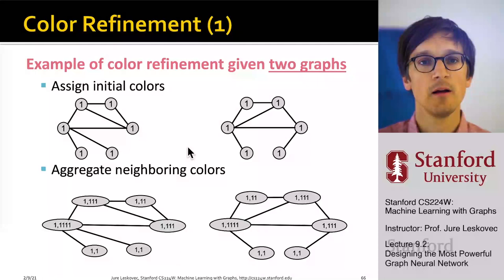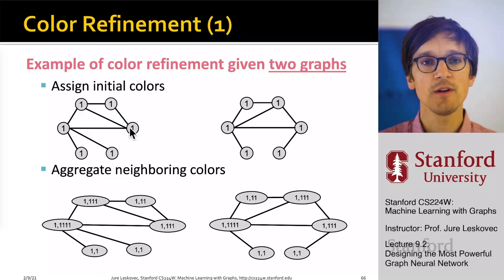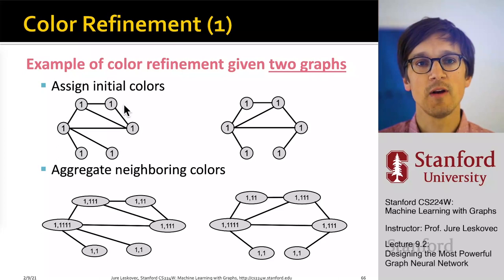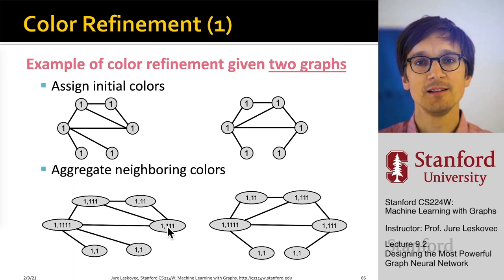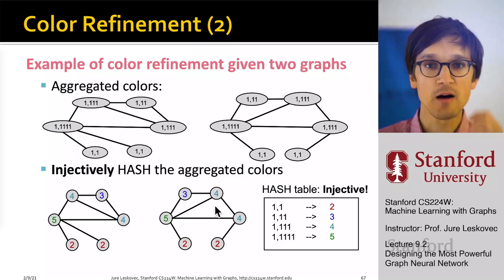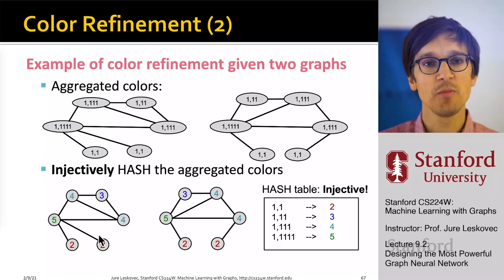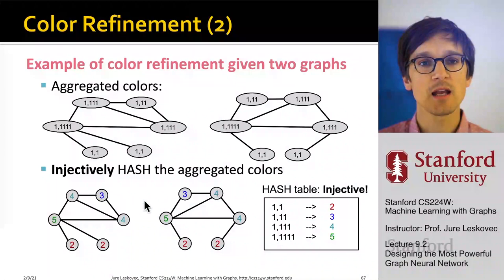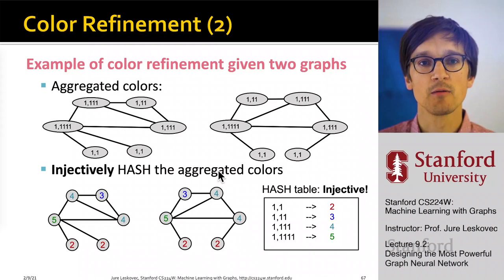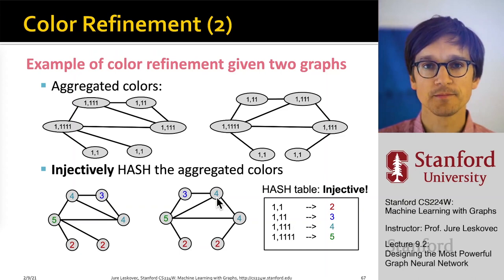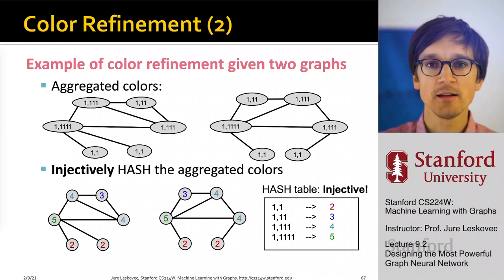For example, given two non-isomorphic graphs, we initialize all node colors to 1. A node with three neighbors each of color 1 gets description (1,1,1,1). After hashing these descriptions — assuming an injective hash function with no collisions — nodes get new colors. For instance, a node with color 1 and three neighbors each with color 1 maps to a new color (e.g., color 4). This process repeats, refining node colors with each iteration.